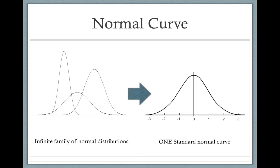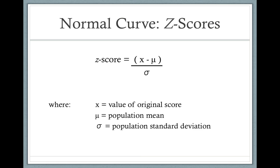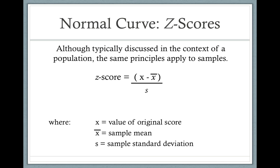The standard normal curve has a mean that always equals zero and a standard deviation that is always equal to one. Now we're going to think about individual scores within these distributions. We can transform any individual score to a z-score using this formula. The formula takes the difference between an original raw score and the mean and divides that by the standard deviation. The formula is written in notation for populations, but the same formula can be applied to samples by changing the notation.